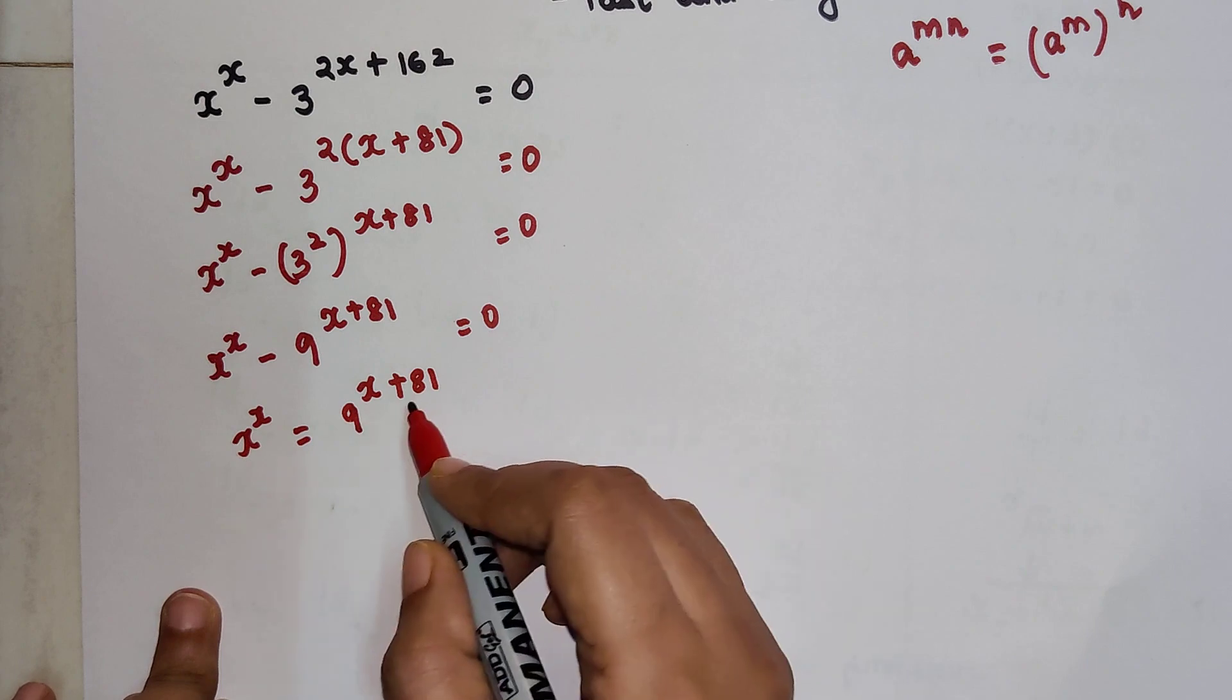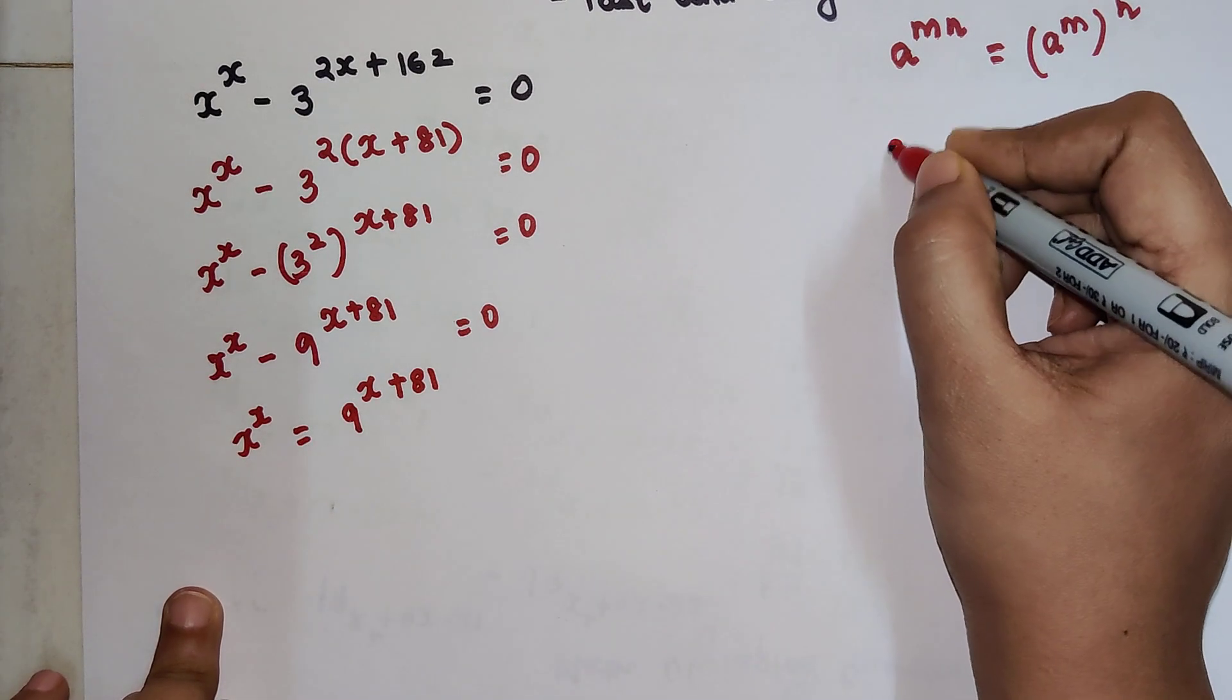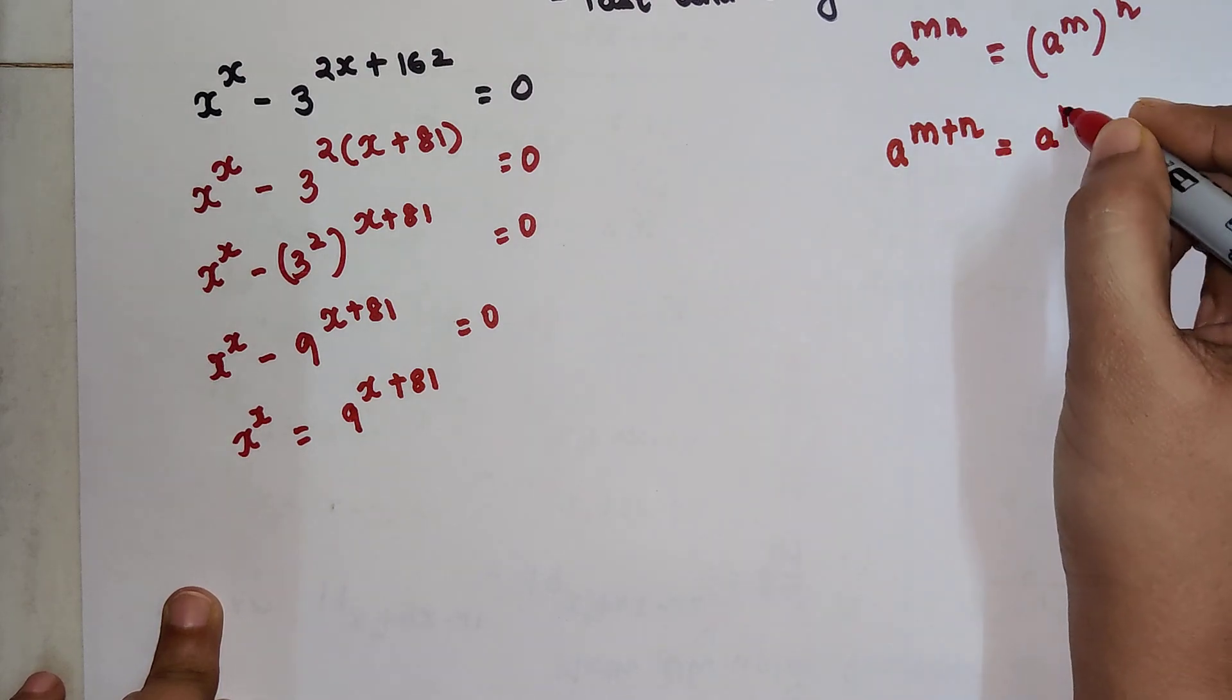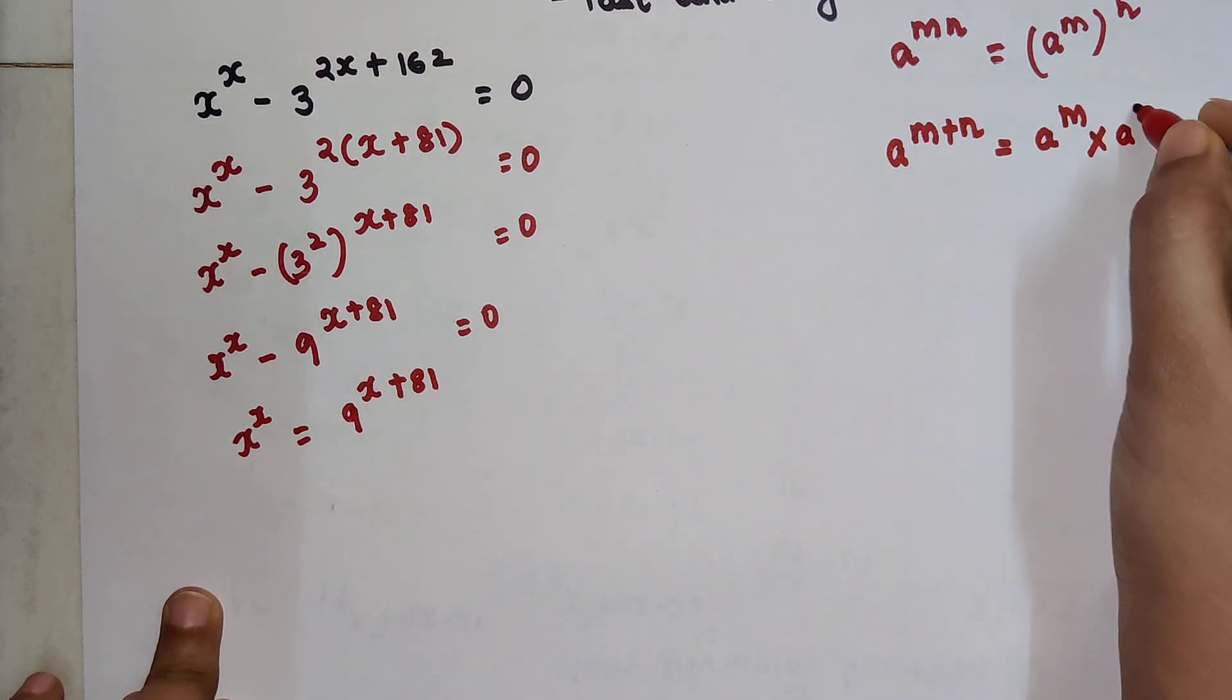Now I can split this. See, understand: a raised to m plus n can be written as a raised to m times a raised to n, correct?